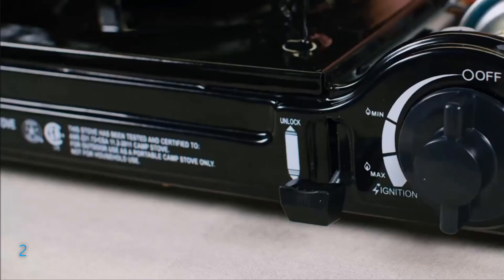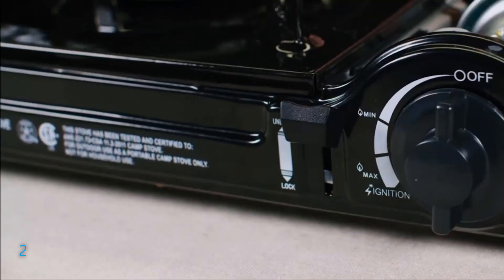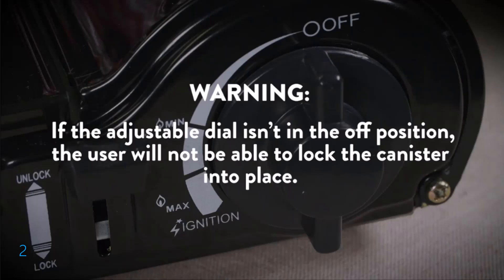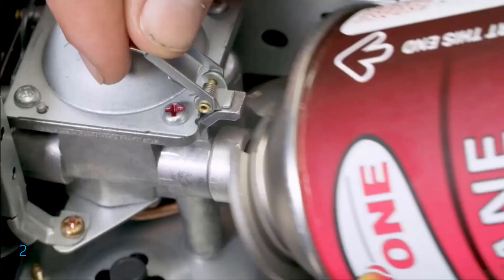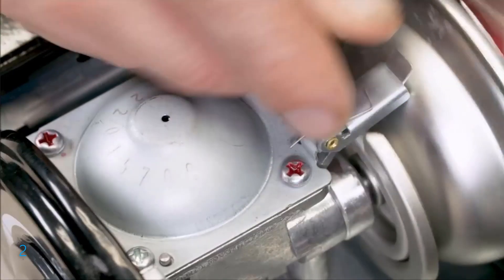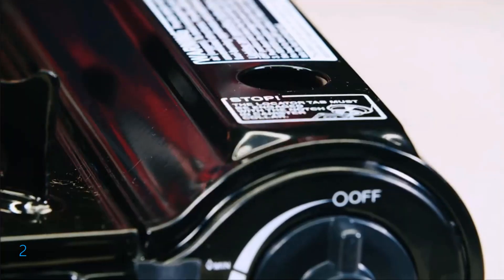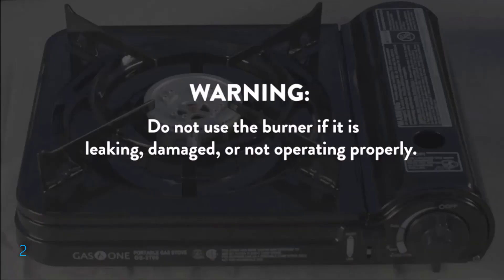Make sure the canister locking lever is in the unlock position. If the adjustable dial isn't in the off position, the user will not be able to lock the canister into place. Open the gas canister cover and line the tip of the butane canister with the regulator notch in the canister compartment. Do not use the burner if it is leaking, damaged, or not operating properly.